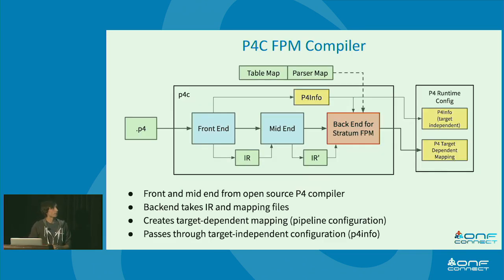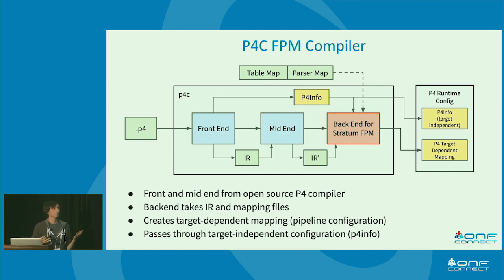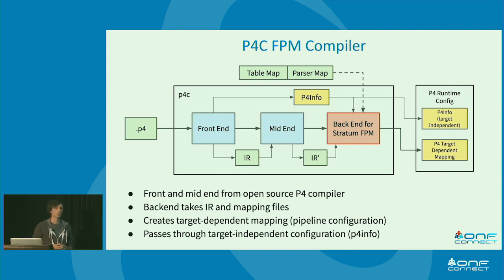For this we have different layers of resource managers inside Stratum and the wrapper around the SDK. Let's focus on the compiler. We didn't actually write a complete compiler — we just supplied the back end into the open-source P4 compiler that's available to the public. That gives us a front end and mid end for free, implementing source parsing, grammar validation of the P4 language, and minor optimizations. We're operating on an intermediate representation. You give it your P4 program as normal, plus a table map and a parser map that go into the back end. It produces a P4 info file that goes into your control plane — target-independent, telling the control plane how to program flows and which tables are available — and a target-dependent mapping for the switch.